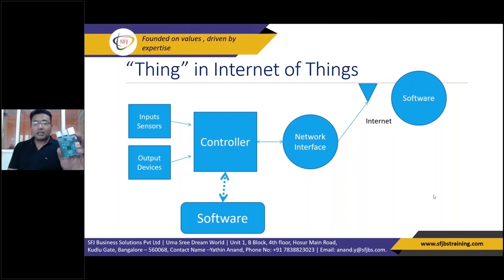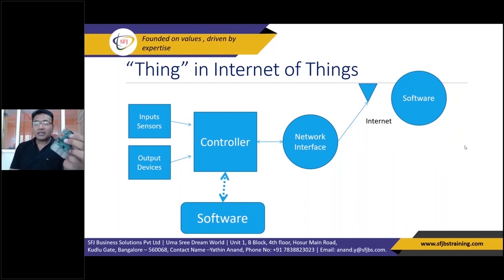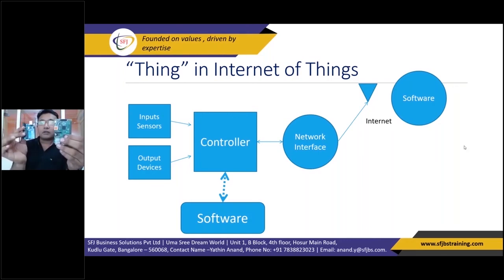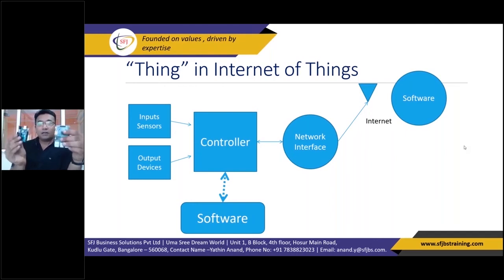Has anyone seen this kind of board before? This is a computer called Raspberry Pi. Unlike a microcontroller which is just a controller board with very small memory, this is a complete computer where you can connect a camera, send emails, and also interface with physical sensors. One or both of these — Arduino and Raspberry Pi — can be used together to create IoT devices.